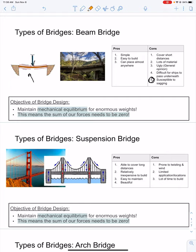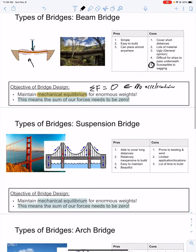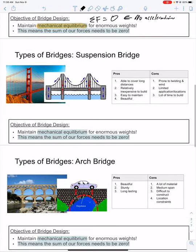Remember that the goal of bridge design is to ensure that we maintain mechanical equilibrium. That's when the sum of our forces acting on our bridge is equal to zero, and that means there is no acceleration. So beam bridges are very simple and easy to build, but prone to sagging.